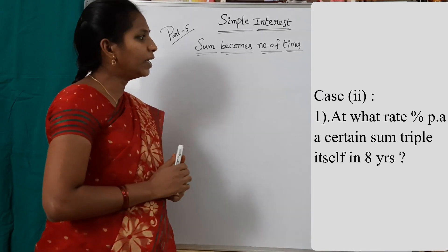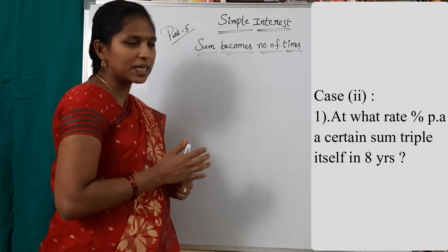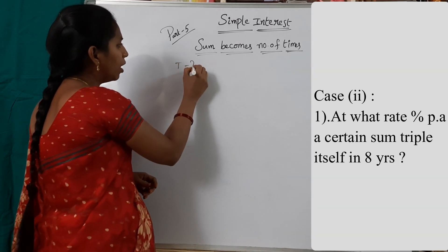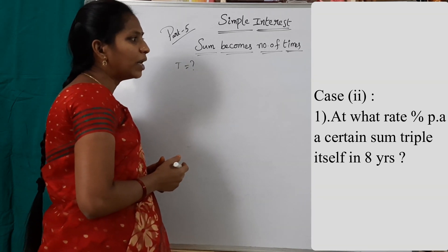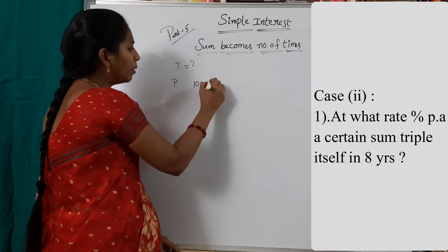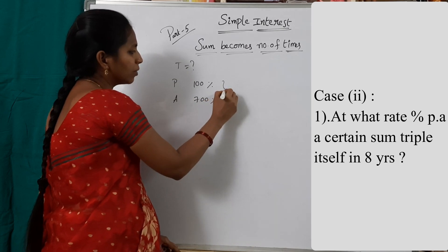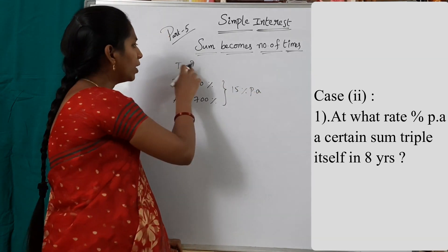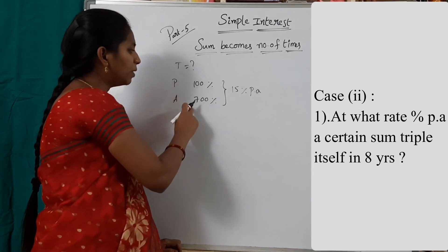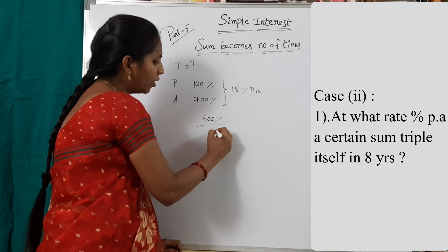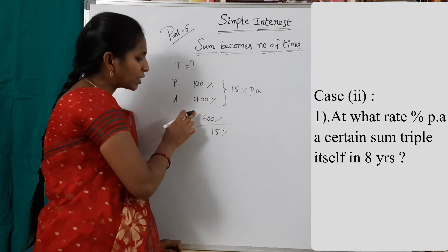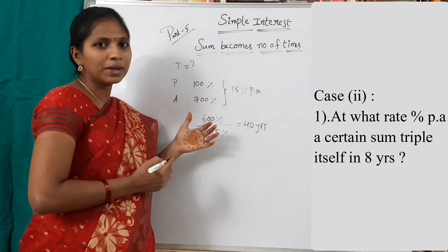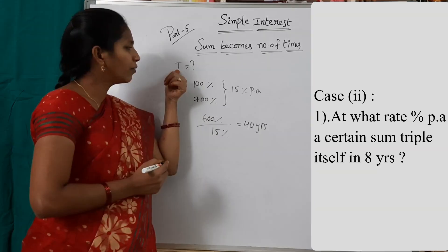Second question in Case 1: In how many years does the sum of money become 7 times itself at 15% per annum interest? We find the time period T. Principal = 100%, amount = 700%, rate of interest = 15% per annum. The difference (simple interest) = 600%. T = 600% / 15% = 40 years. These two examples are Case 1, where we find the time period.